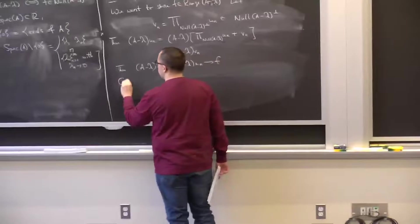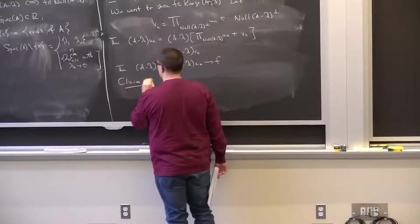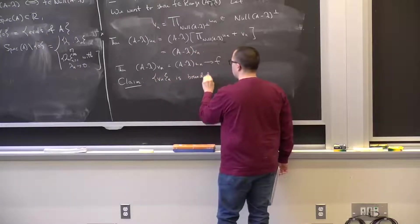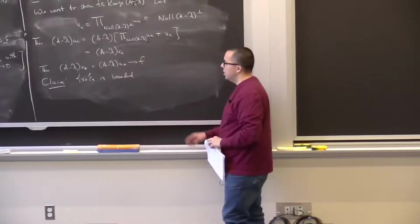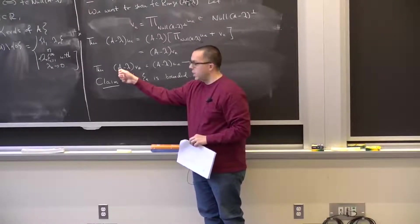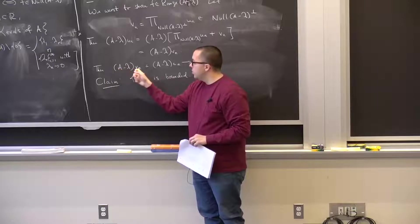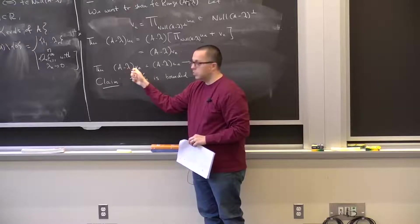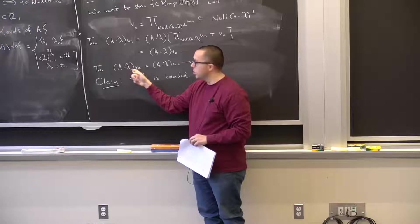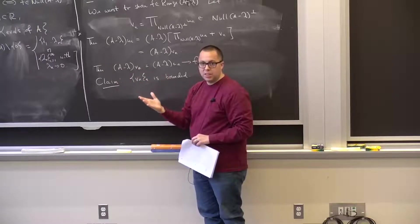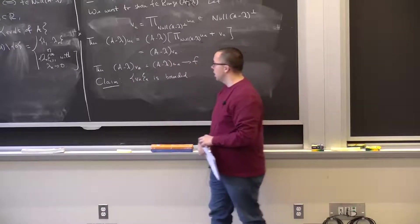My claim is that the sequence vₙ is bounded. Once we show this, we're essentially done: since A is a compact operator, A applied to vₙ has a convergent subsequence. Since the whole expression A minus λ vₙ converges, λ times vₙ also converges, and since λ is non-zero, vₙ converges up to a subsequence. Therefore A minus λ vₙ converges to A minus λ v for some v, showing that f is in the range of A minus λ.